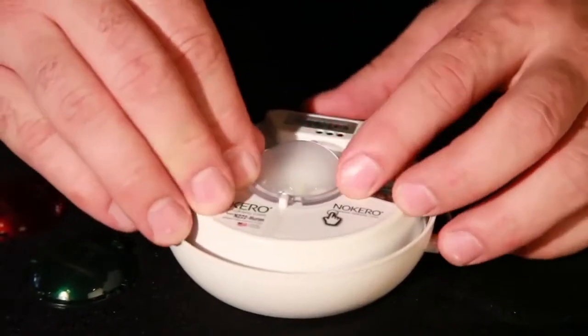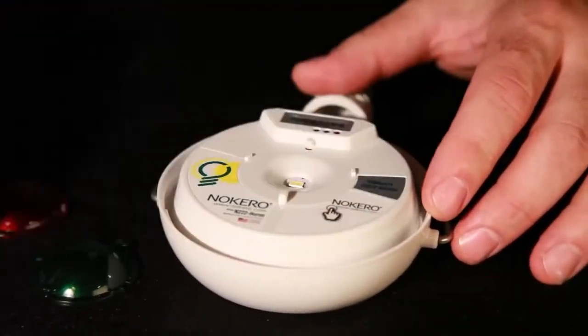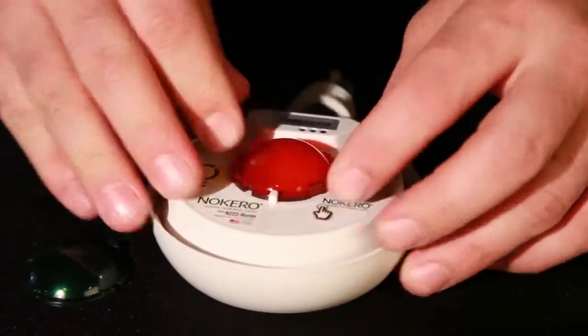The Nocaro N222 is provided with these three lenses. One is a diffuser, one is green, and one is red.